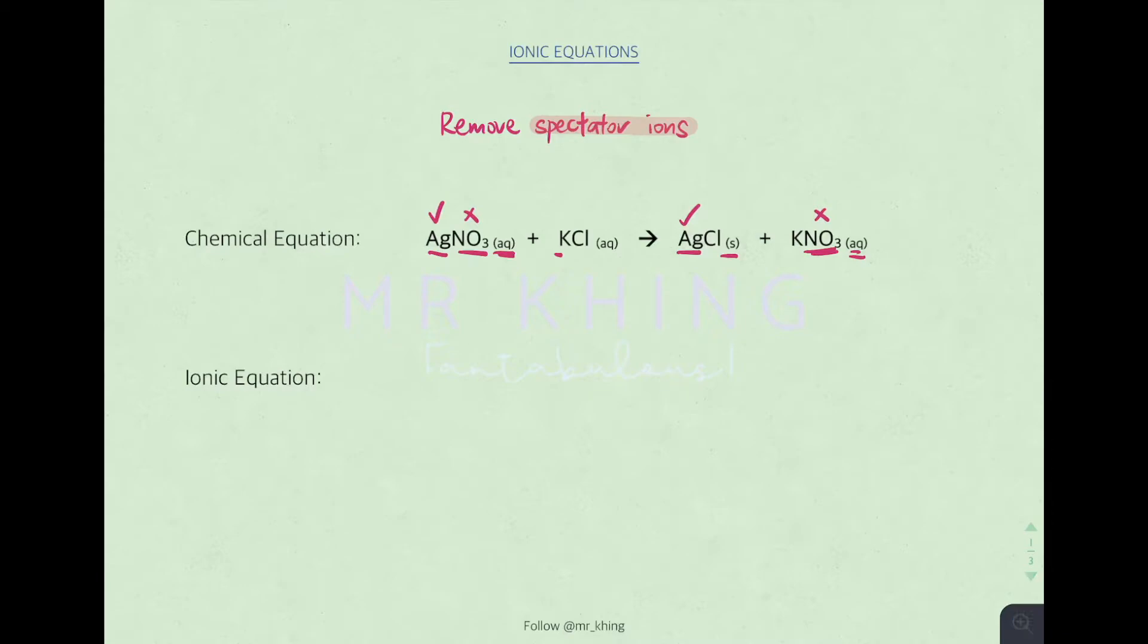Potassium initially aqueous, after it is still aqueous. Remain the same, so we do not include potassium. Then chloride aqueous, chloride solid. Changes in state symbol, so therefore we include chloride.